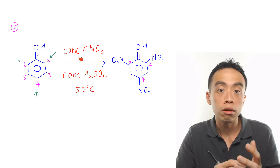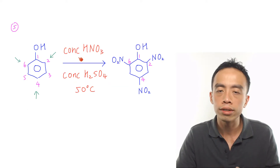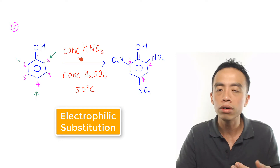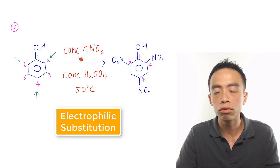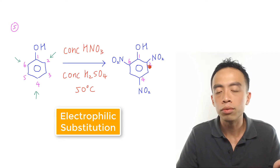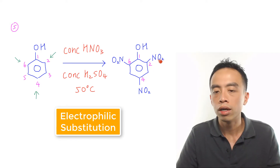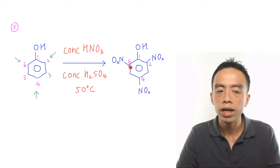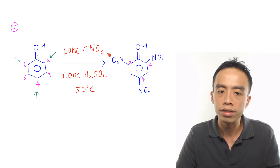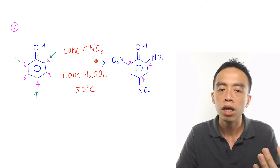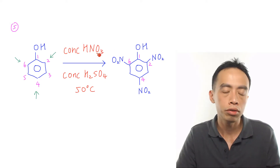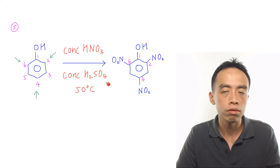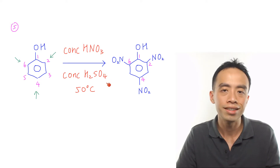The fifth major reaction involving phenol is the tri-substitution involving the nitro group. This gives the product 2,4,6-trinitrophenol, and this reaction is done using concentrated HNO3 with concentrated H2SO4 as catalyst at 50 degrees C.